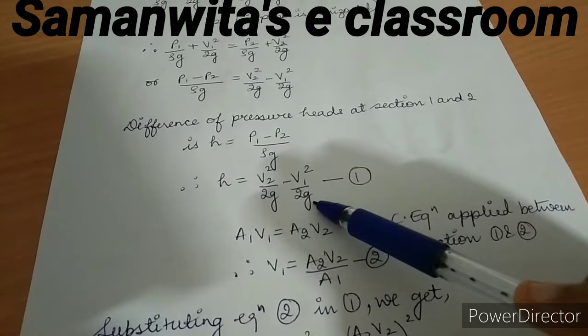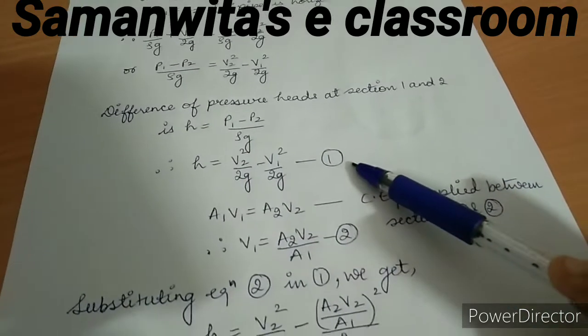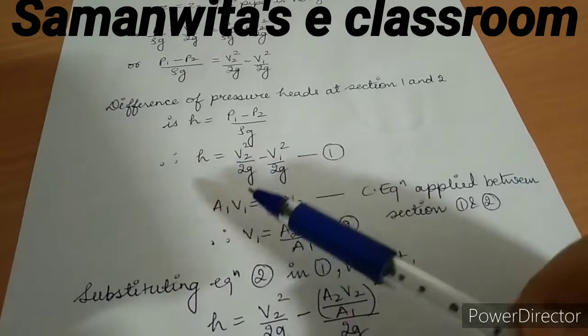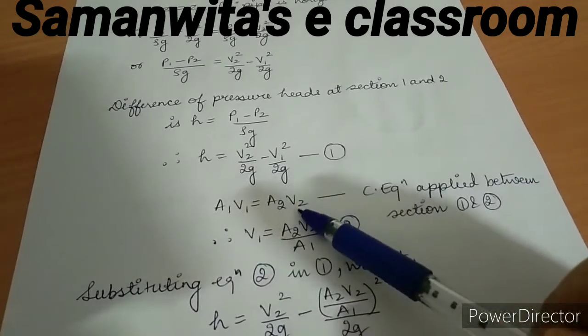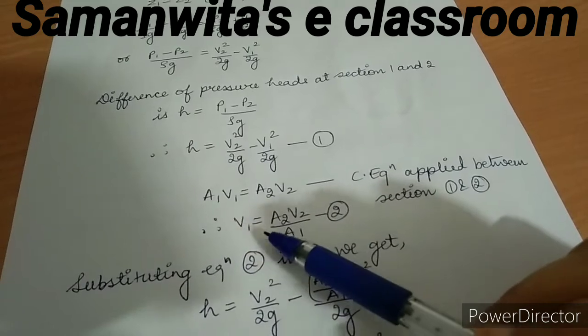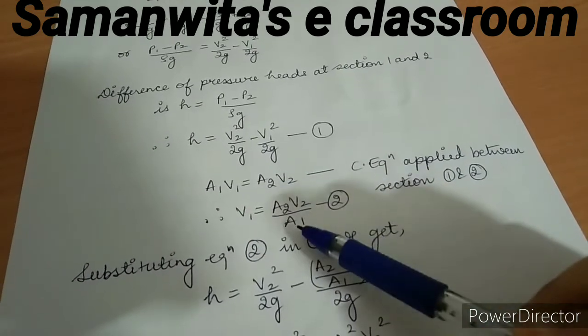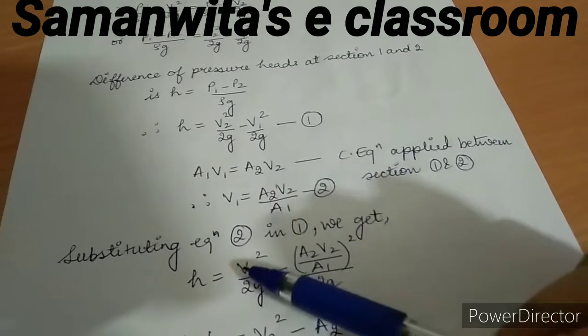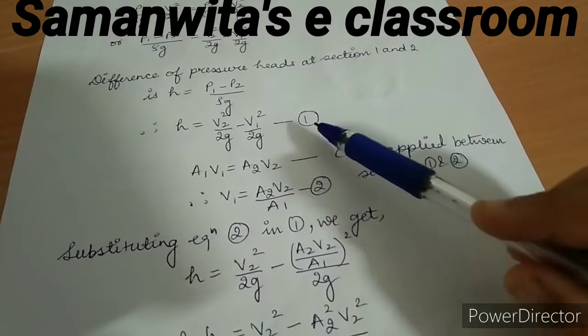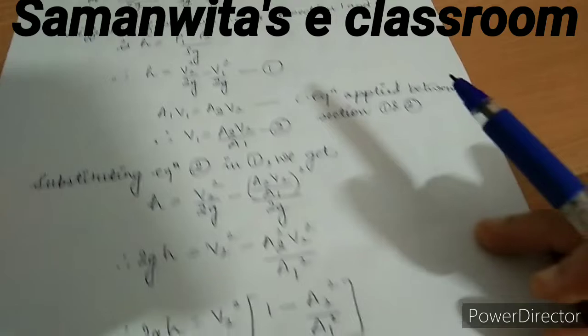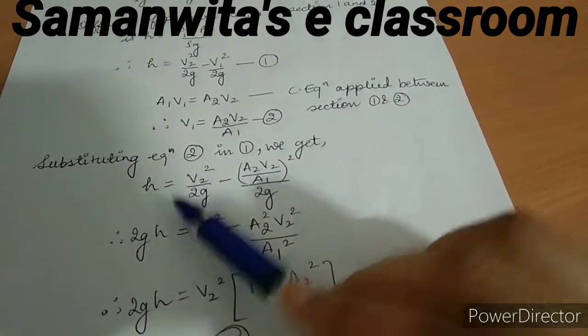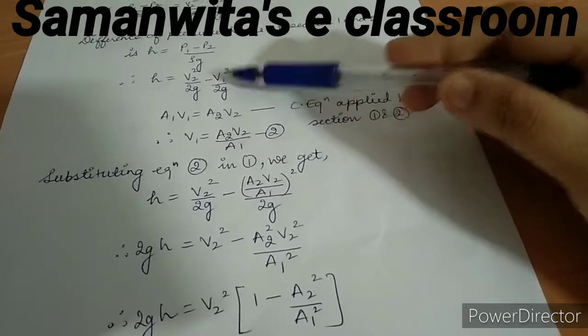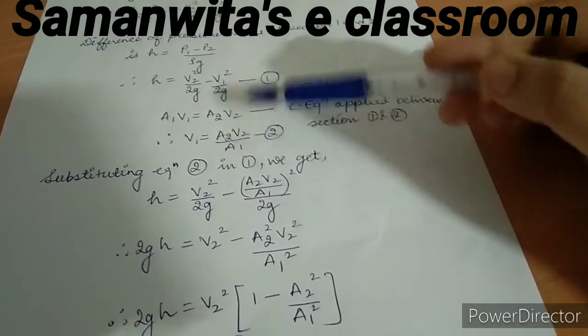We know from continuity equation which is applied between sections 1 and 2, I can say A1V1 = A2V2, therefore I can say V1 = A2V2/A1. I mark this as equation 2. Let's substitute equation 2 in equation 1.